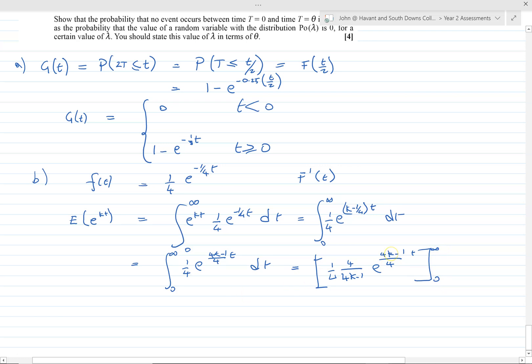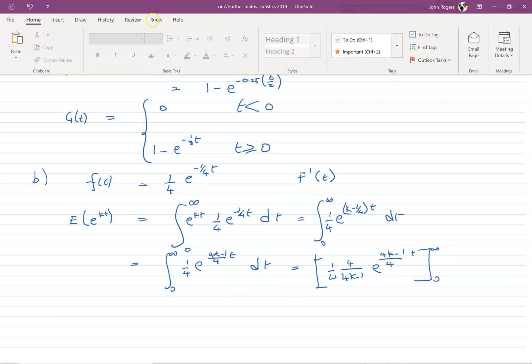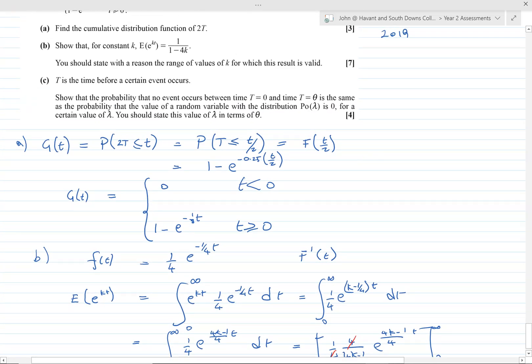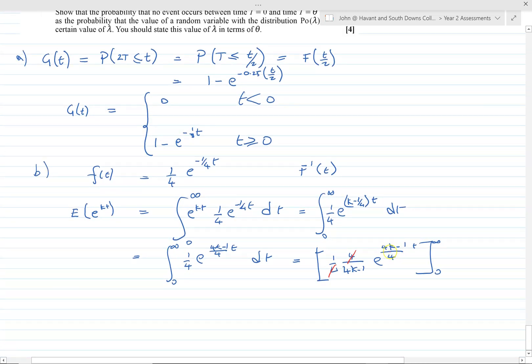The 4 cancels there. Now here's the thing, if we go back to the question, it talks about giving a valid range of k. If k is too big, this is going to end up positive. This 4k minus 1 over 4 has got to be negative, otherwise the infinity put into it, it's undefined, it's going to go off to infinity itself. So we require 4k minus 1 over 4 to be less than 0, so that this index as a whole is negative.